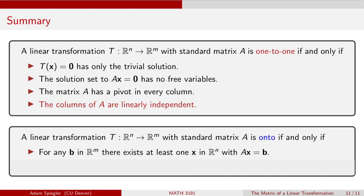So what would it mean for b to be in the range of this function? It means that there exists some vector x in the domain that under this map T, under this multiplication by A, winds up mapping to b.